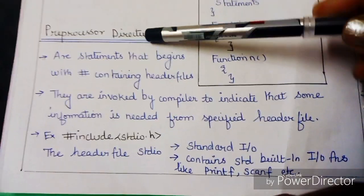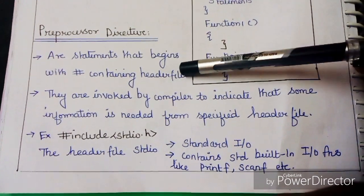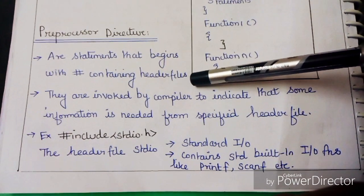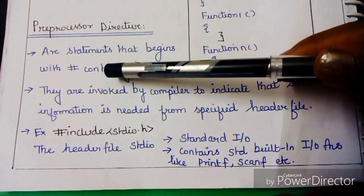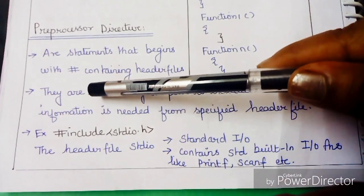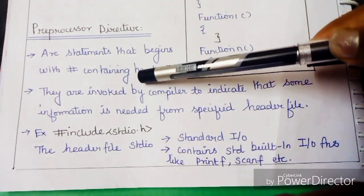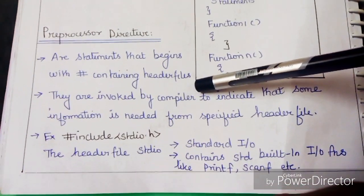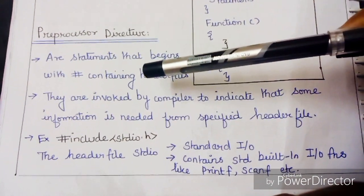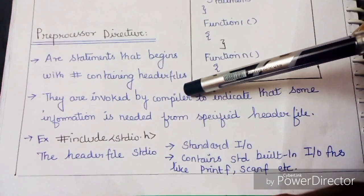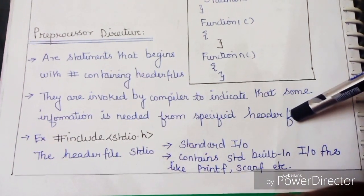The first segment — preprocessor directives — are statements that begin with a hash symbol and contain header files. In the preprocessor directive, statements will begin with a hash. We begin with header files. They are invoked by the compiler to indicate that some information is needed from the specified header file.